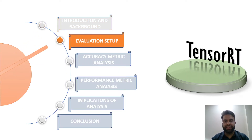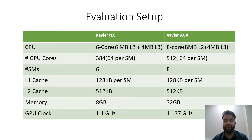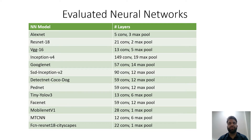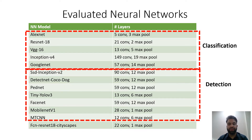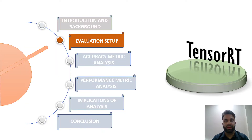Now let's go through the evaluation setup. We used two embedded boards for our analysis: the Xavier NX and the Xavier AGX, both Nvidia boards with Volta architecture. Xavier AGX is a much more powerful board than NX — it has more CPU cores, more GPU cores, more memory, and a higher clock frequency. For neural networks, we divided them into three types: image classification networks, detection networks, and one segmentation network.